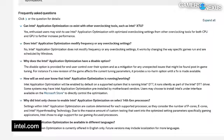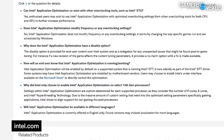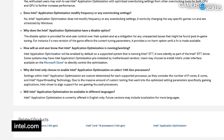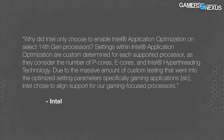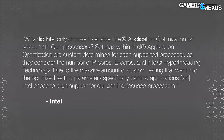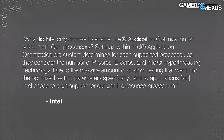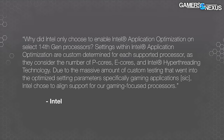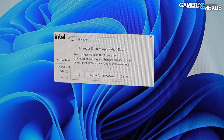The lack of the 14600K might give Intel some cover fire — maybe this is all just coming later. Intel has attempted to answer this in its FAQ. They state that settings within Intel Application Optimization are custom determined for each supported processor, considering the number of P-cores, E-cores, and Intel Hyper-Threading technology. Due to the massive amount of custom testing that went into the optimized setting parameters specifically for gaming applications, Intel chose to align support for their gaming-focused processors. At face value, they're not excluding the other options — they're stating it takes a lot of work to implement. And given the lack of game support, that appears to be true.